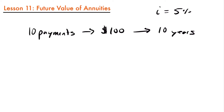If we were to use our currently known methods of calculating the future value of investments, we would go through the calculation like this. We would say that the future value is equal to your first deposit or payment of $100, compounded for the amount of time it's going to be in your account. You're making 10 payments over the course of 10 years, so that first payment is going to be in your account until the end of those 10 years. If you're making this payment at the end of year one, it's going to be in there for another nine years. So we'll multiply it by 1 plus your interest rate of 0.05, giving us 1.05.